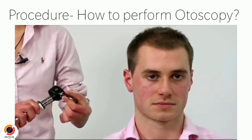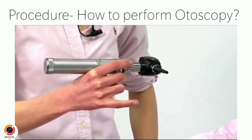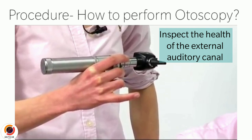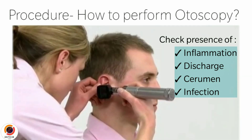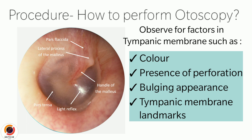The examiner can then gently insert the speculum into the patient's external auditory canal and inspect the health of the external auditory canal, evaluating factors such as presence of inflammation, discharge, cerumen, and infection. The examiner should slowly progress the speculum into the canal until the tympanic membrane becomes visible, then evaluate the health of the tympanic membrane, observing colour, presence of perforation, bulging appearance, and landmarks including the pars flaccida on the superior aspect, the pars tensa on the posterior aspect, the cone of light on the inferior and anterior aspect, and the handle of malleus on the anterior aspect.